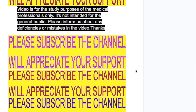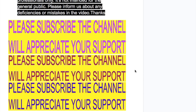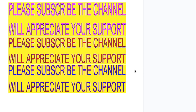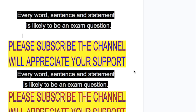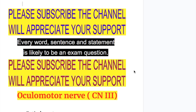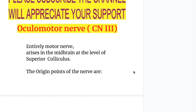In this video, we'll discuss the oculomotor nerve, its connections, functions, and the muscles it supplies. The oculomotor nerve, the third cranial nerve, is an entirely motor nerve and arises in the midbrain at the level of the superior colliculus.